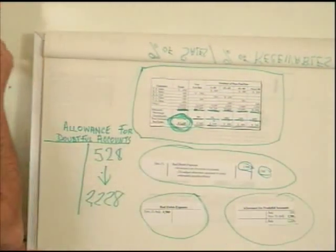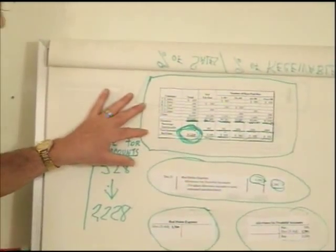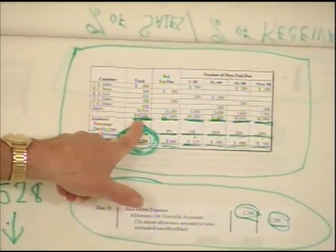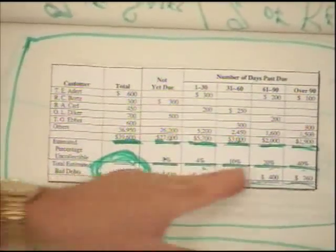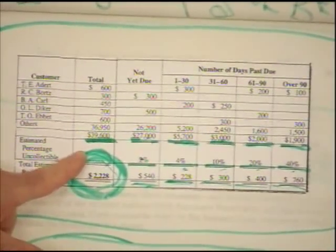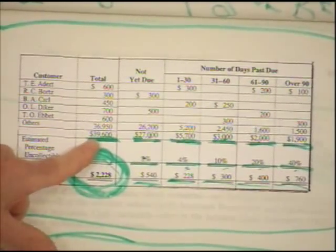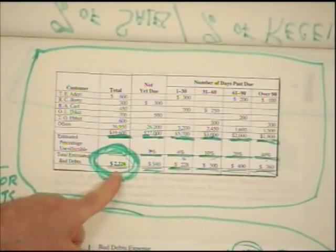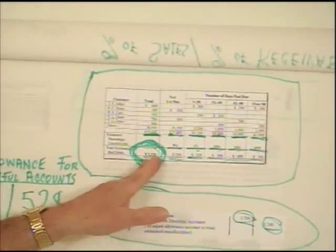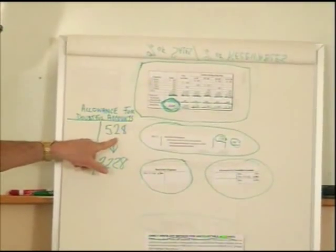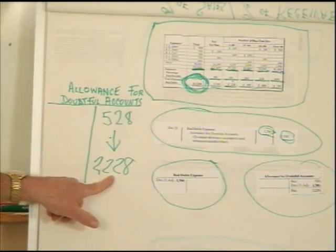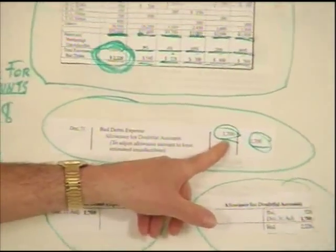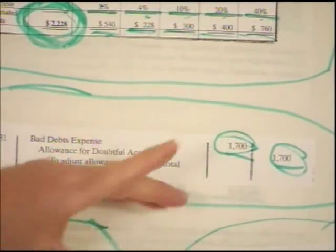There's also a shortcut method under percentage of receivables, which is simply to take one flat percentage times the total receivables of $39,600 instead of going through the full aging process. Whatever that flat percentage calculation comes out to — say $2,228 — that's still what we want the allowance account to be. We look at the allowance balance, determine what we need to credit it to reach the calculated target, credit the allowance account for that difference, and the bad debt expense is the byproduct.